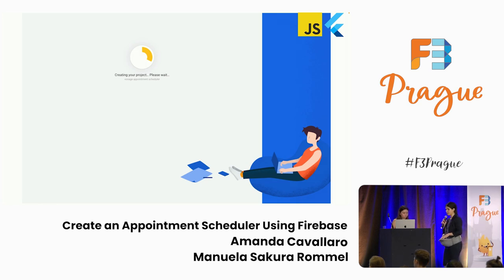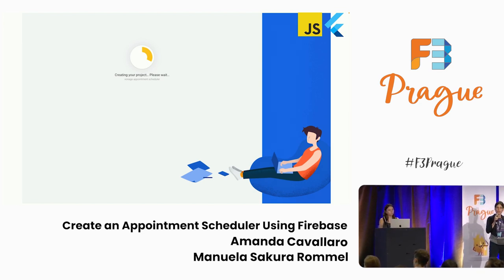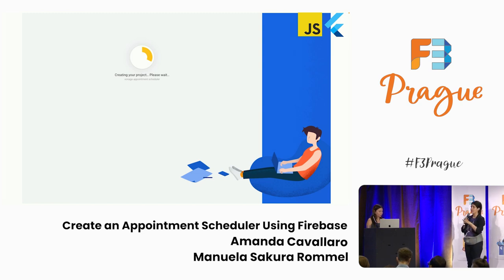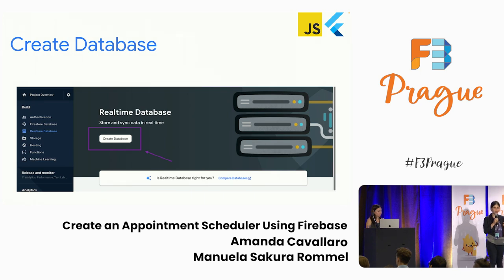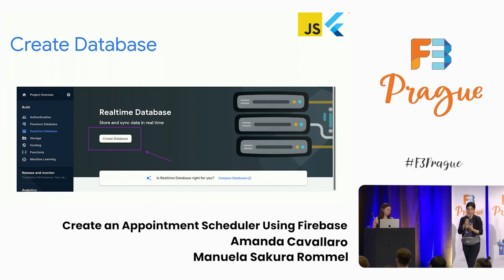Then you would choose if you want to use Google Analytics or not. After that, you click to create the project, and that takes a little time because we're creating the GCP and Firebase project. What's important is that because we are saving information in the database, we have to create a database. From the dashboard, we click the button to create a database, and that will create a real-time database instance for us.